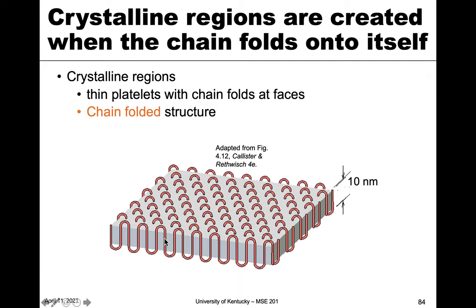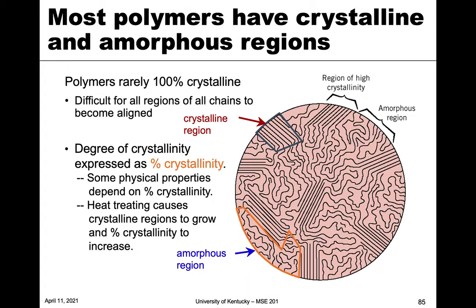There are these loops on the end that don't necessarily contribute to the crystalline structure. So this is the foundation for how we get a heavily crystalline region, but the folded regions on the ends do not belong to that crystalline structure. Most polymers have crystalline and amorphous regions — a microstructure with heavily crystalline regions showing chain folding, but also surrounding amorphous regions. Polymers are rarely 100% crystalline because it's difficult for all regions of all chains to become aligned, so we're left with this two-phase material.